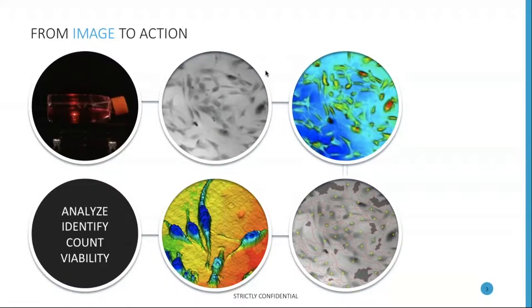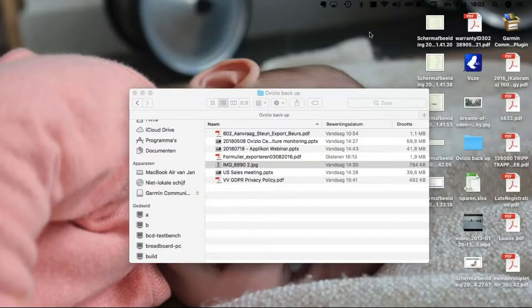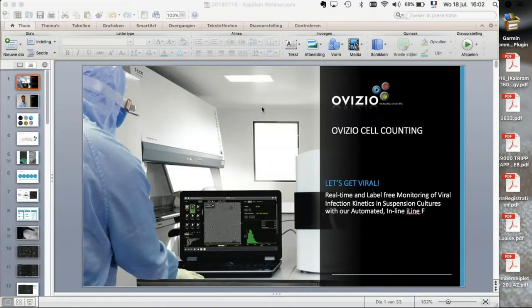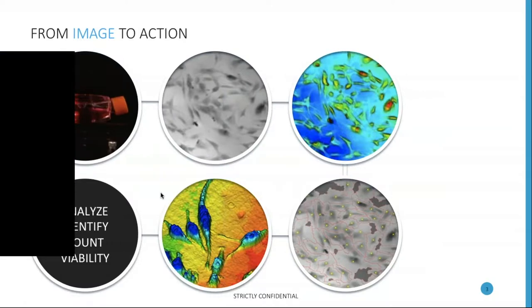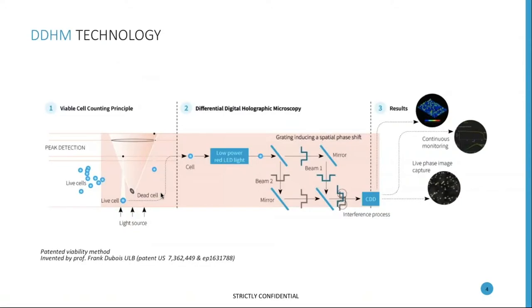So what exactly is 3D holographic imaging? A 3D holographic image is what you see in the circle on the bottom middle, and the information we get from that is very specific — which is what we use to analyze and identify cells, to count them, and to look at viability, among other things.